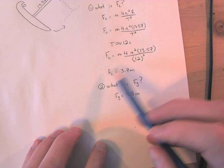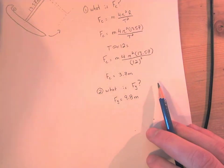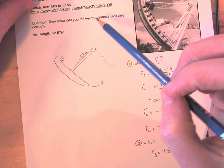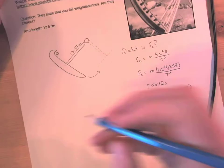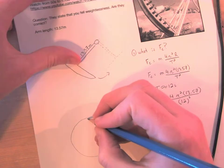So the question that was, they state that you feel weightlessness, are they correct? Generally in a question that we've done, we'll have a vertical circle and at the top we'll ask ourselves, they only feel weightless if FG is the same as FC, right?